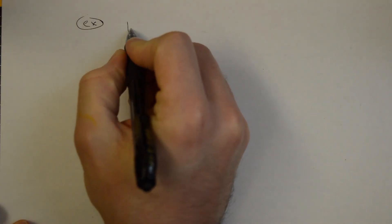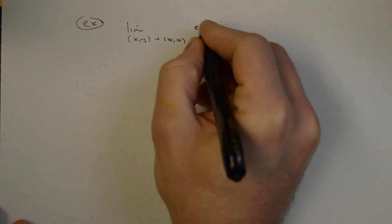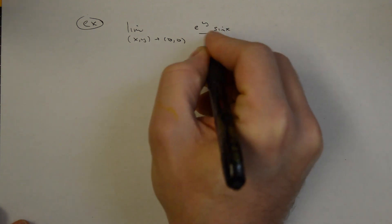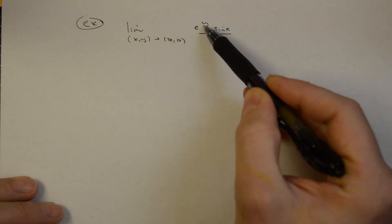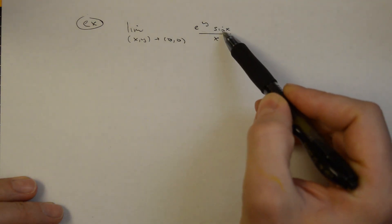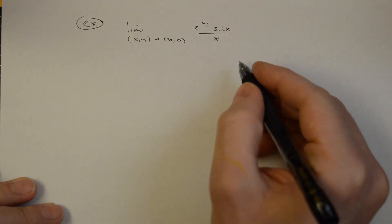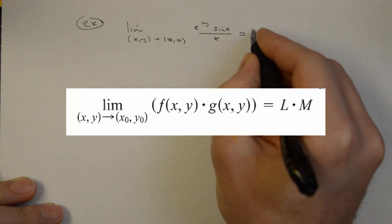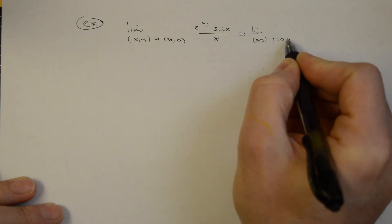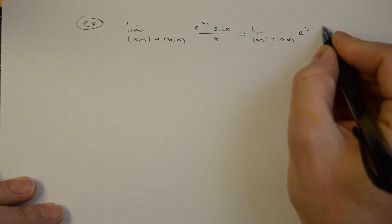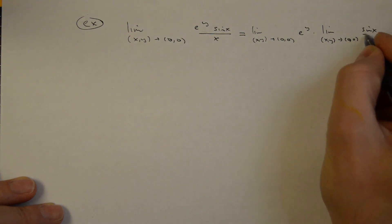For our first example, let's take a look at the multivariable limit as (x,y) approaches the origin of e^y · sin(x)/x. If you plug in 0 for y, you get e^0 which is 1, sine of 0 is 0, divided by 0 — so it's 0 over 0. But the limit of a product is the product of the limits, so we can write this as the limit of e^y times the limit of sin(x)/x as (x,y)→(0,0).